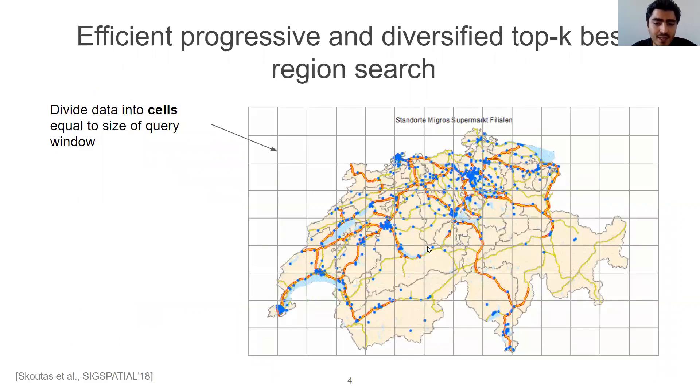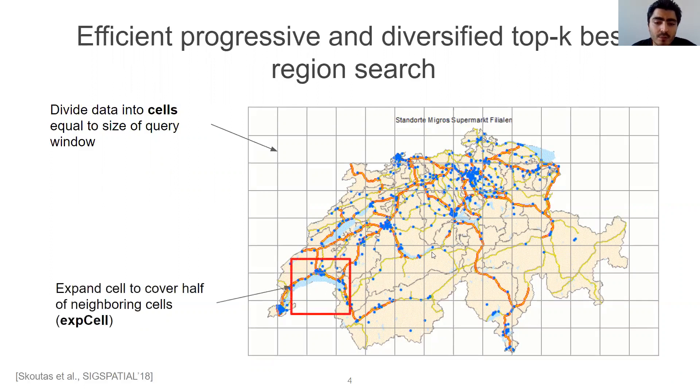There is a centralized algorithm for addressing this problem, published in last year's SIGSPATIAL. The high-level idea is as follows. First, the algorithm partitions the space into a uniform grid where each cell has the size of the query window. Then, the algorithm goes through a progressive workflow of refinement per cell in order to detect the top-k regions with the highest score.